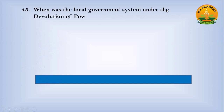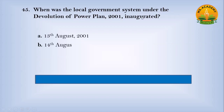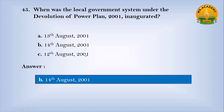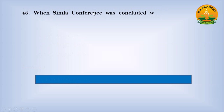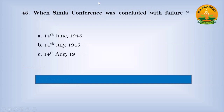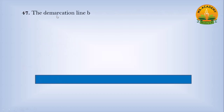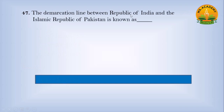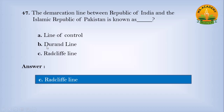When was the local government system under the Devolution of Power Plan 2001 integrated? Option A, 13 August 2001; Option B, 14 August 2001; Option C, 12 August 2001. When was the Shimla Conference concluded with failure? Option A, 14 June 1945; Option B, 14 July 1945; Option C, 14 August 1945. Answer: A — 14 July 1945. The demarcation line between the Republic of India and the Islamic Republic of Pakistan is known as: Option A, Line of Control; Option B, Durand Line; Option C, Radcliffe Line. Answer: C — Radcliffe Line.